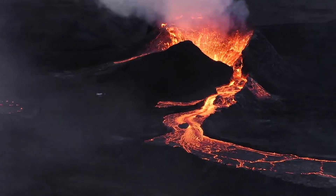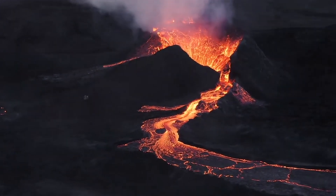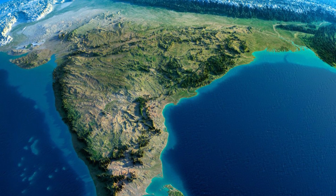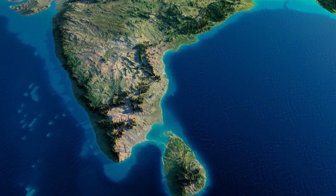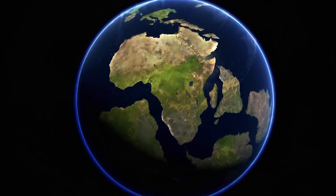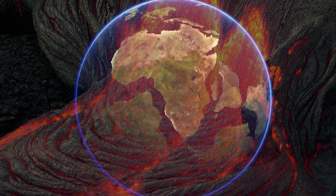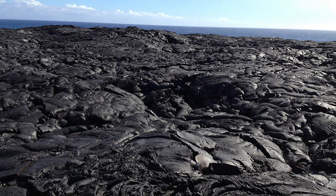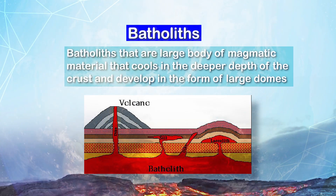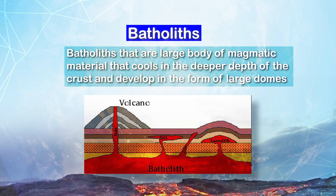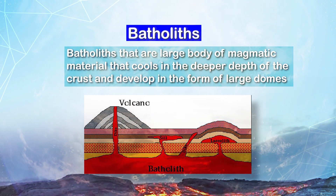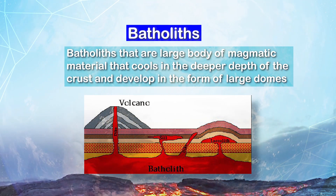Now you know what volcanoes are, what the structure of a volcano is, and what the five major types of volcanoes are. Volcanoes tend to change the Earth's surface, and they also result in the formation of landforms. Some of these landforms are formed below the Earth's surface and few others above it. The landforms formed inside the Earth's surface are known as intrusive forms. The first is batholiths — large bodies of magmatic material that cool at deeper depths of the crust and develop in the form of large domes.